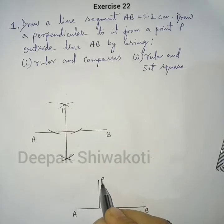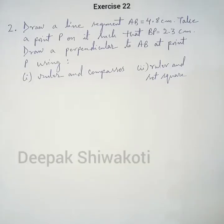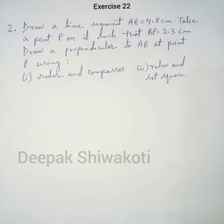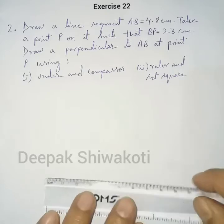Question number two: draw line segment AB equals 4.8 centimeters. Take a point P on it such that BP equals 2.3 centimeters. Draw a perpendicular to AB at point P using (1) ruler and compasses, and (2) ruler and set square.